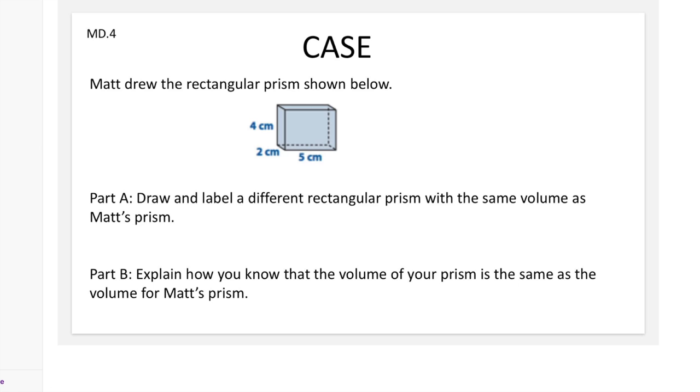So I'm going to start with 'Matt drew the rectangular prism shown below.' I'm going to chunk Part A: Draw and label a different rectangular prism with the same volume as Matt's prism. I'm going to chunk: draw and label a different rectangular prism and same volume as Matt's prism.